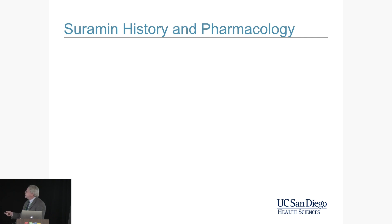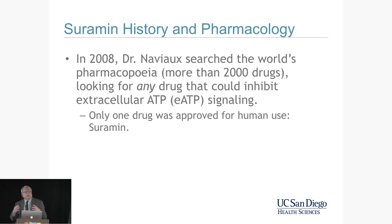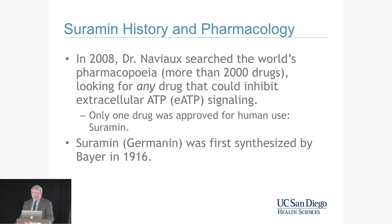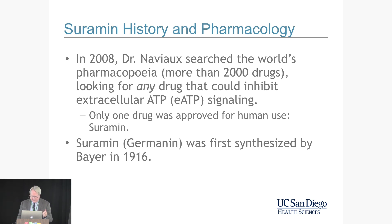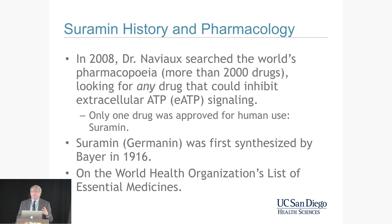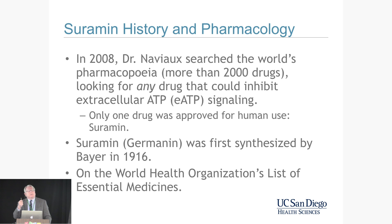We went looking for any drug in the world that could block the release of ATP through these regulated stress channels. When we did that in 2008, there was exactly one drug among all approved drugs available for human clinical use that could do this — that drug was Suramin. It turned out to be one of the oldest man-made drugs in our pharmacopoeia, originally made in 1916. It is still on the World Health Organization's list of essential medications for the treatment of African sleeping sickness (trypanosomiasis) and river blindness (onchocerciasis) — the only two disorders for which it is approved, which is why there is no approved use in the United States.